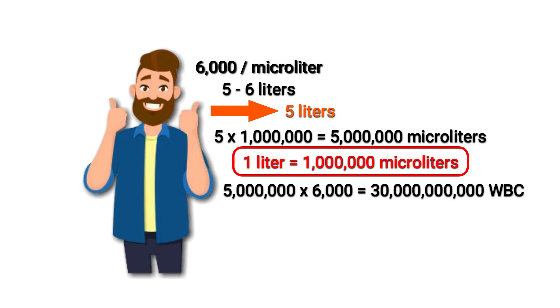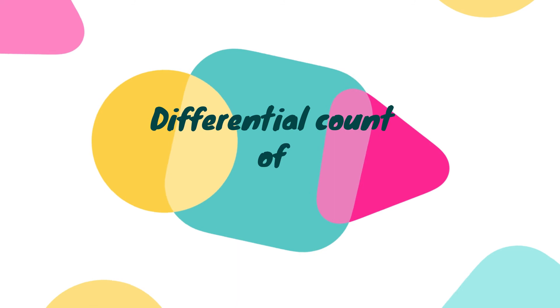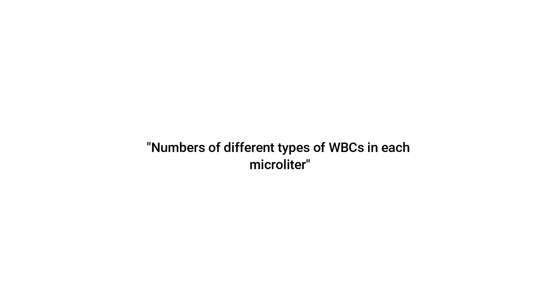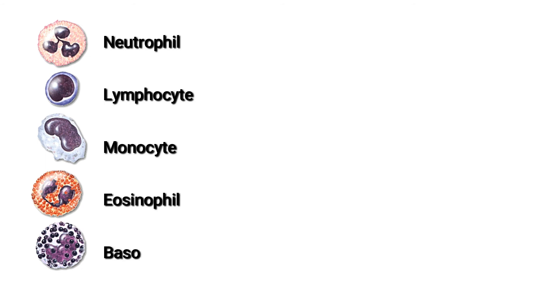It is not possible to count every white blood cell one after another with the current technology at hand. Now let us move to the next part of the video: the differential count of WBC. A differential count means the count of the different types of WBCs in each microliter. We know that there are 5 different types of WBCs present in the body, and this is another estimation that predicts how many and which kind of WBCs are present.